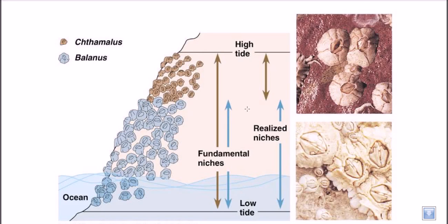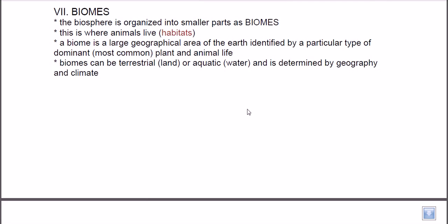That's why it is called the realized niche. Now if we talk about biomes — we have talked about biomes before. Biomes are just below the biosphere in the organization of the ecosystem. The biosphere is divided into simpler, organized parts called biomes. Biomes are actually the habitats for animals, and there are different types of biomes present on planet Earth.